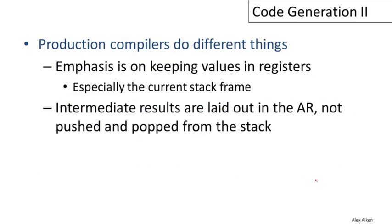Production compilers do things somewhat differently. The main difference is a strong emphasis on keeping values in registers, since operations on registers are much more efficient than saving and loading from the stack. A production compiler would try to keep current activation record values in registers rather than on the stack. Also, temporaries would be assigned pre-assigned fixed positions directly in the activation record rather than being dynamically pushed and popped, saving the overhead of manipulating the stack pointer.